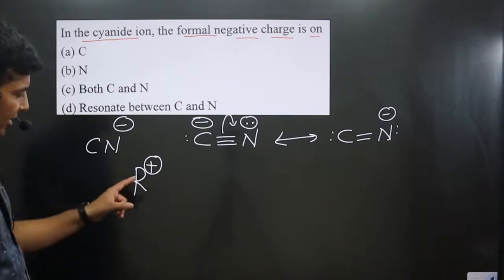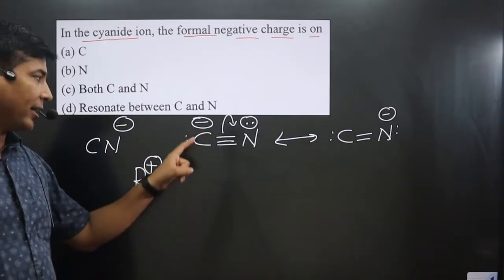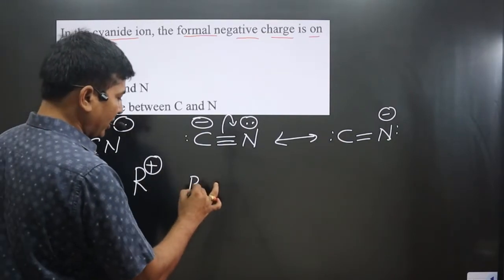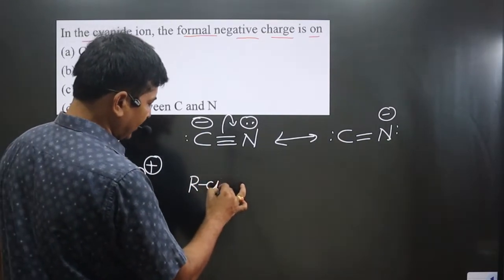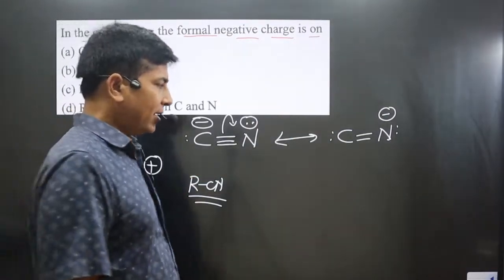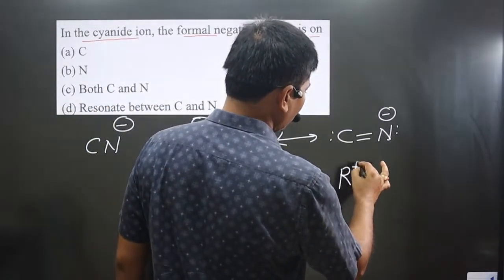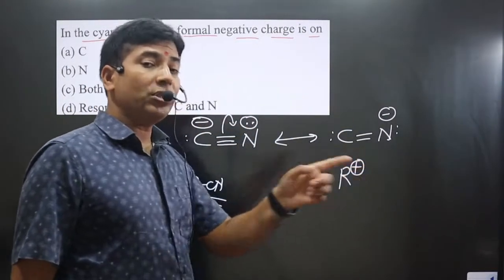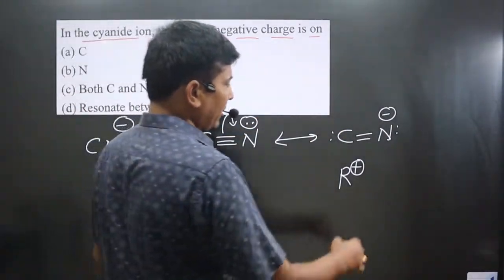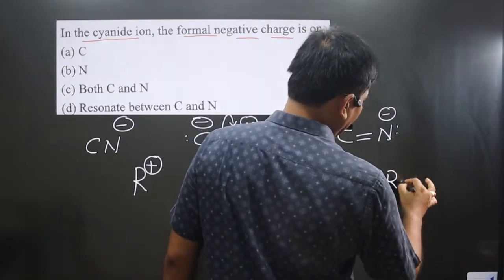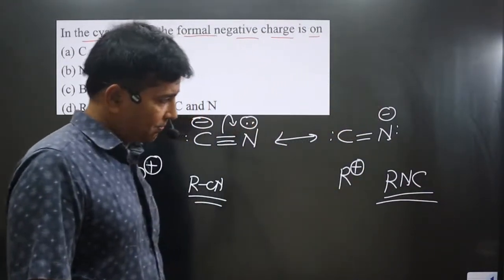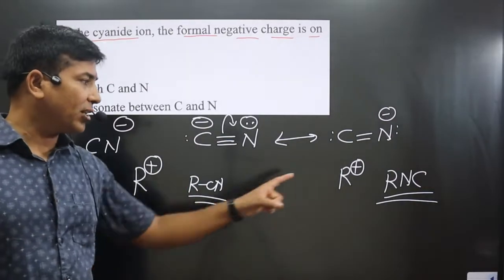If an alkyl group with a positive charge approaches the cyanide ion, carbon will donate electron density — electrostatic attraction occurs — and we get RCN, alkyl cyanide. On the other hand, if the alkyl group with a positive charge approaches from the nitrogen side, nitrogen donates its electron density to the alkyl group, and we get R–NC, which is alkyl isocyanide.